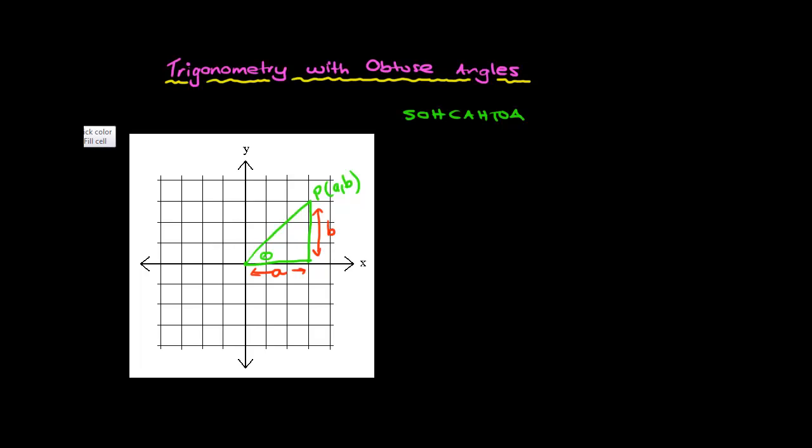Writing out trigonometry ratios for SOHCAHTOA, we need C as well. Sin θ is opposite over hypotenuse, B over C. Cos θ is adjacent over hypotenuse, A over C. And tan θ equals opposite over adjacent, B over A. This is general stuff with no actual values, but when we talk about angles within our first quadrant—the first quarter of our plane—all our values here are positive.